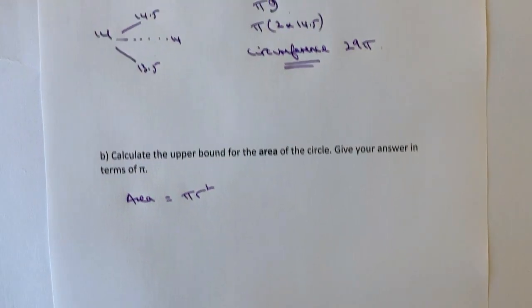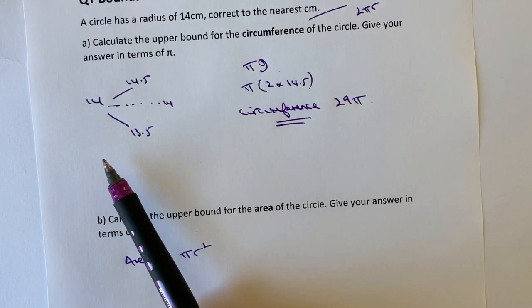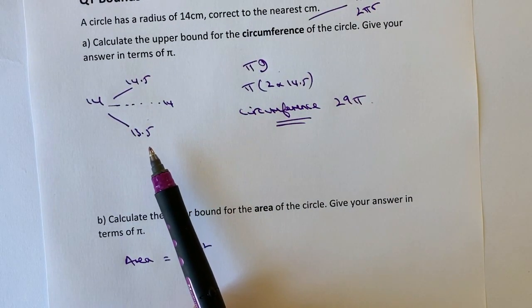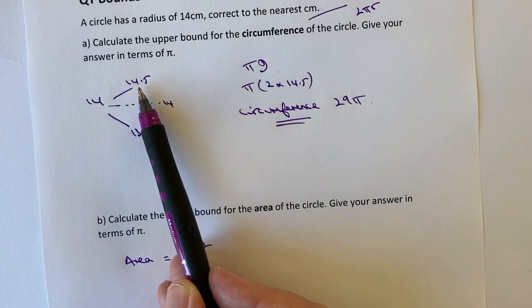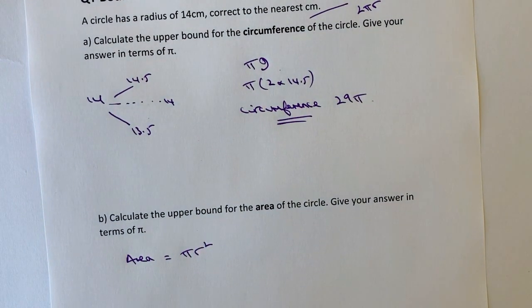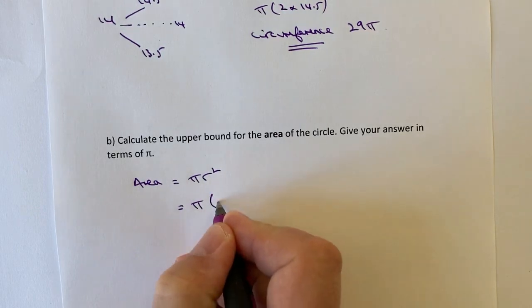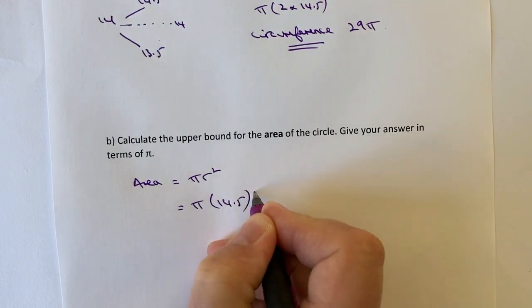So going back to our upper and lower bounds, if we want the upper bound for the area of the circle, we're going to need to multiply by 14.5. That's the upper bound. So it's going to be π and then it's 14.5 squared.